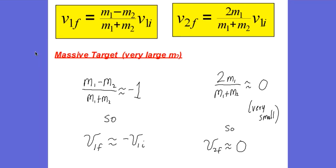Now let's look at the example of a very massive target — M2 is very large. When M2 is very large, the fraction M1 minus M2 over M1 plus M2 is approximately negative one. So the final velocity of the projectile will be about the same magnitude as it came in but in the opposite direction — it bounces back at about the same speed. And since the target is very large, plugging in a very large M2 gives nearly zero for the target's final velocity, so it doesn't move much.